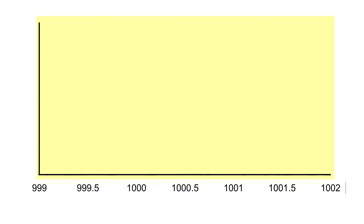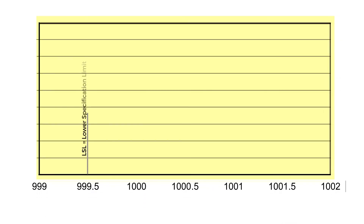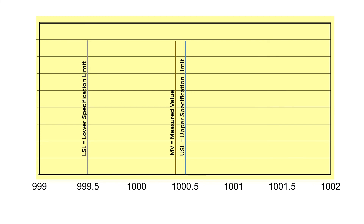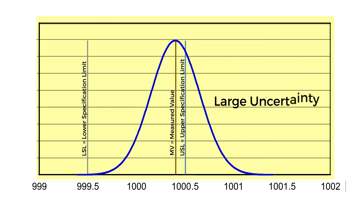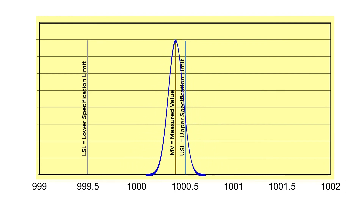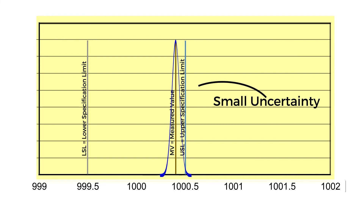When we use the appropriate formula and draw the concept, we draw the lower and upper specification limits at 999.5 and 1000.5. Next, we put in the location of the measurement at 1000.4. The calculated calibration process uncertainty determines the width of the distribution. As you can see, the larger the measurement uncertainty, the larger the risk relating to the measurement location. The smaller the uncertainty, the lower the risk, such as the case in this example when Morehouse performs the calibration.